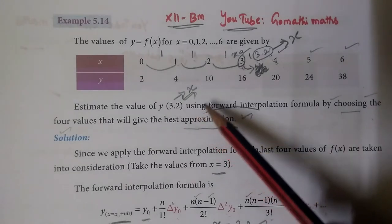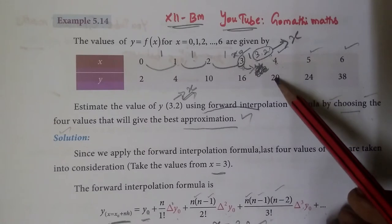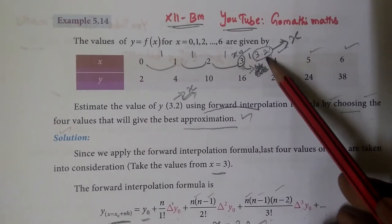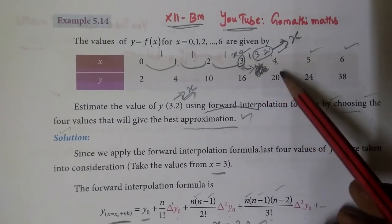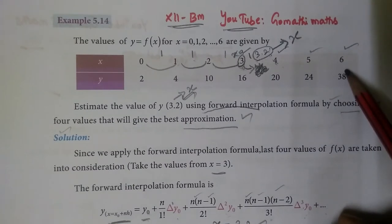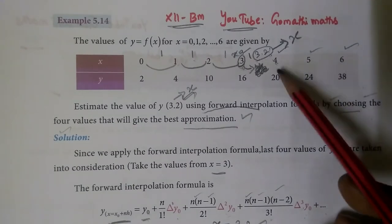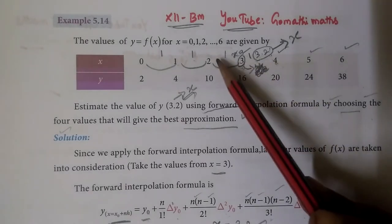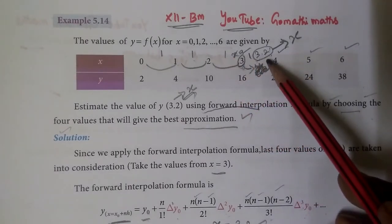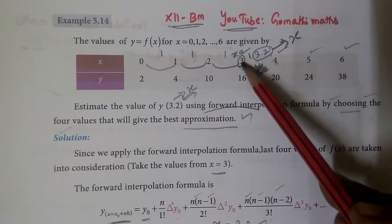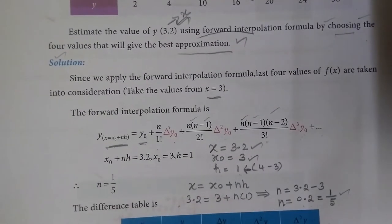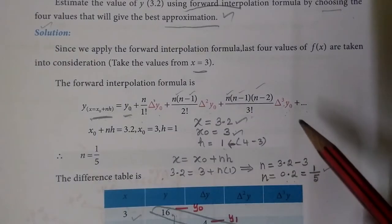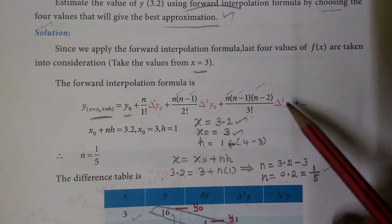Now, in the value 3.2, here the range is between 3 and 4, and 3.2 falls within. Starting point x0 is 3. We have x values 3, 4, 5, 6 for the forward interpolation table. Now x0 is the previous starting point. Since we apply the forward interpolation formula, 4 values of f of x are taken into consideration.